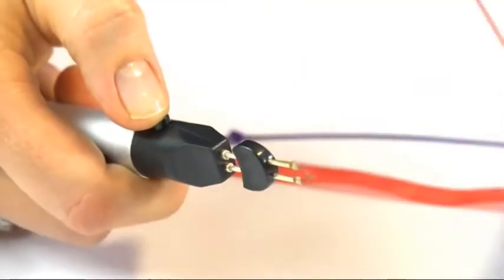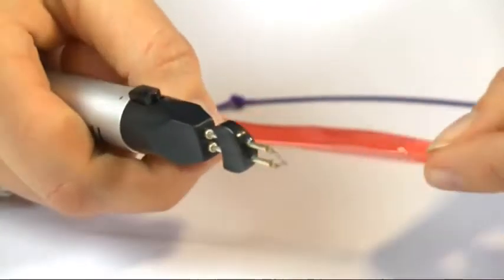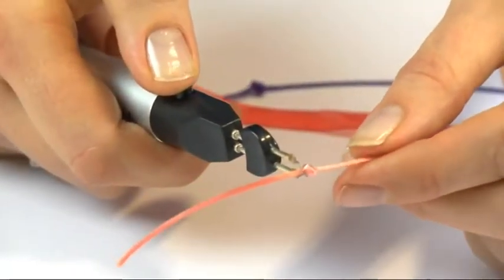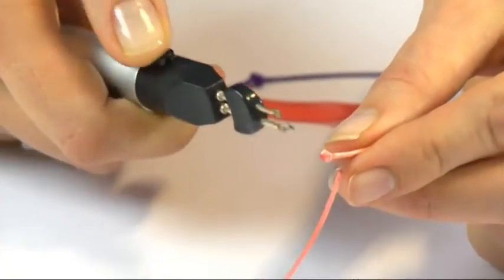Now, you can use this on any nylon based thread, so this is our satin cord, just threading it through, press the button and away it comes.